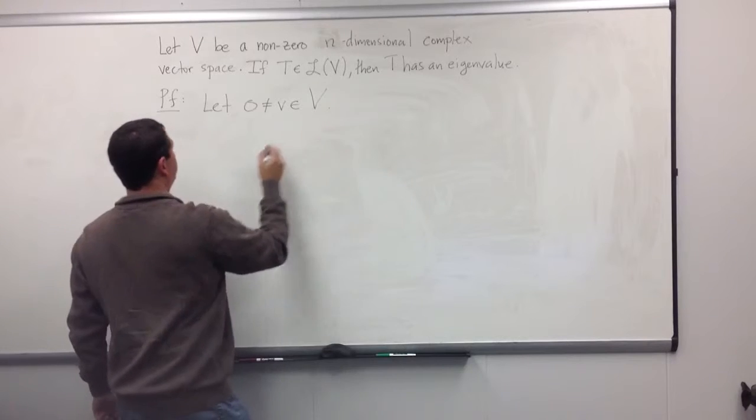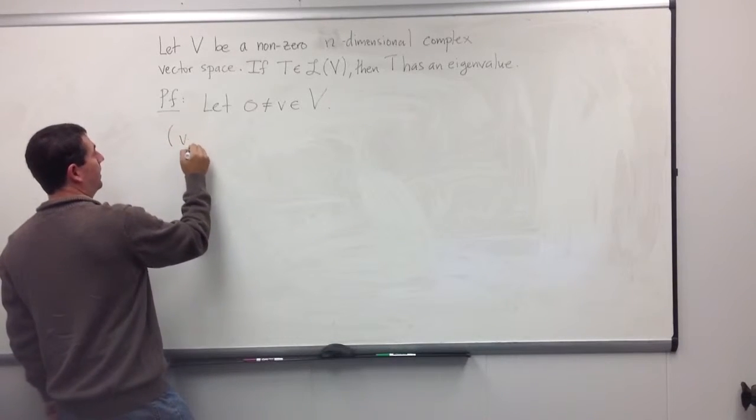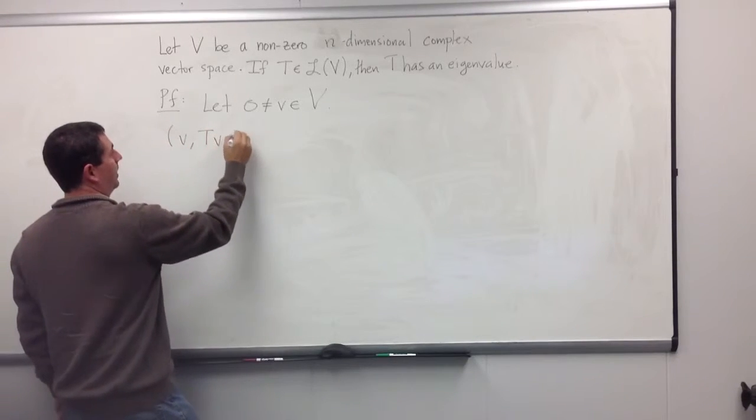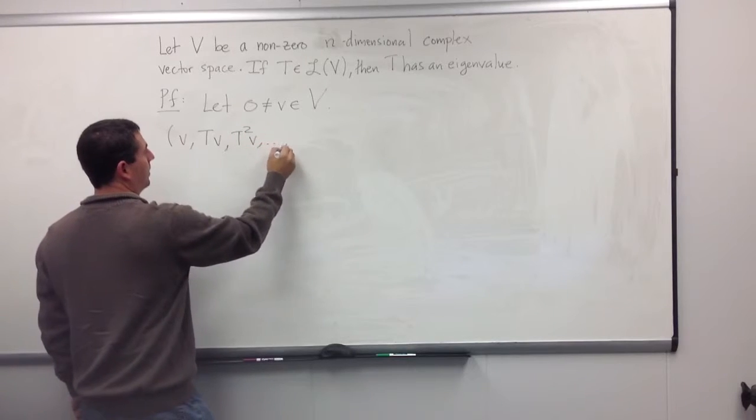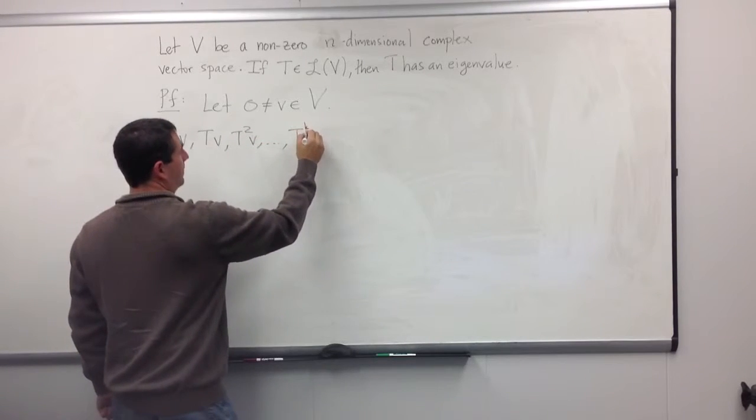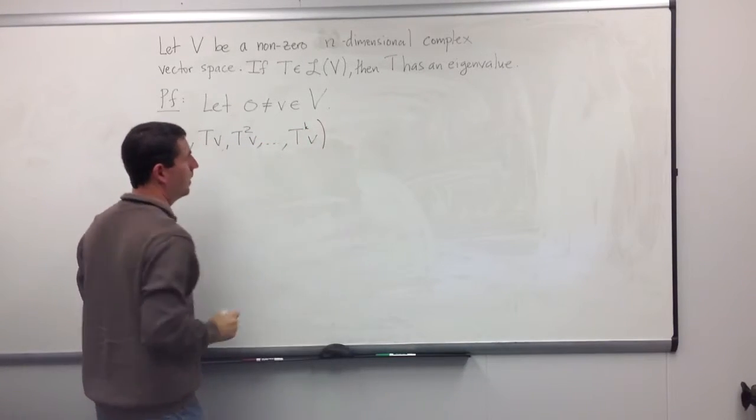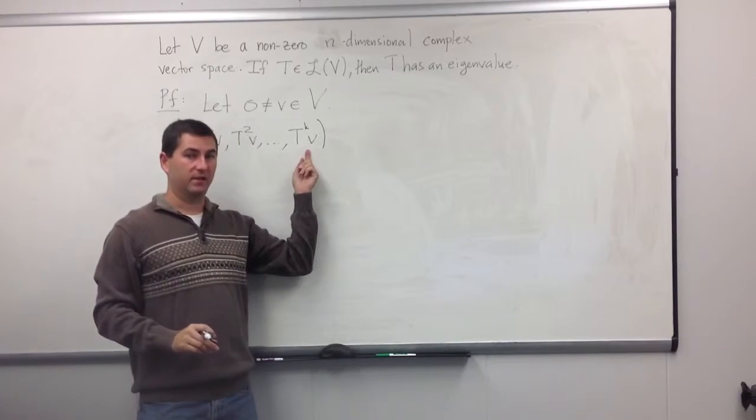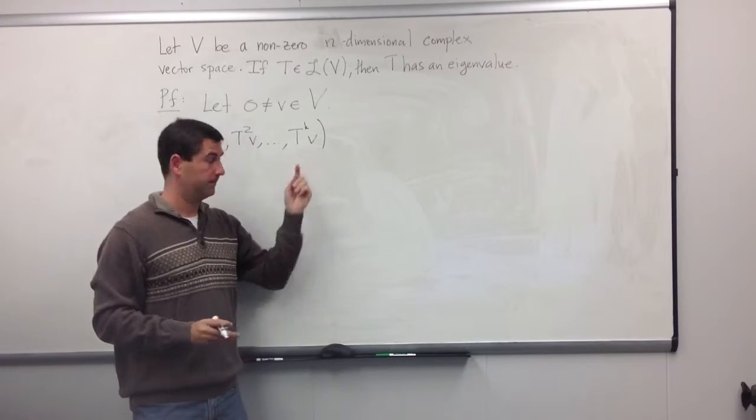So I start with v, and I write down Tv, and T²v, and so forth. And I'll get to some spot, T^k v, which will be the first time that my list is linearly dependent.